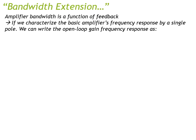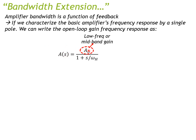Now we move to the second topic: bandwidth extension. Another benefit of having a feedback amplifier is that you can achieve a wider bandwidth, but as we'll see, this comes at a cost. If we characterize the basic amplifier frequency response by a single pole, we get a low-pass filter shape. We can write the open loop gain frequency response as A(s) = A₀ / (1 + s/ωH), where A₀ is the low-frequency or mid-band gain and ωH is the corner frequency.